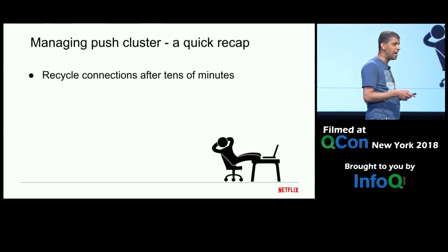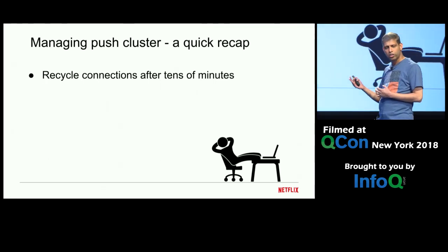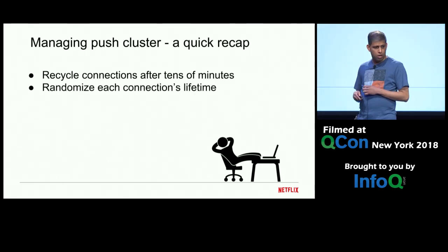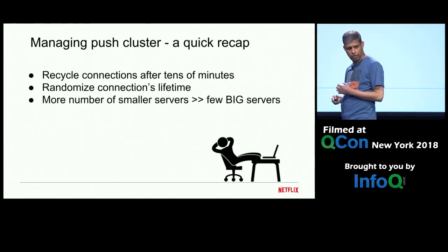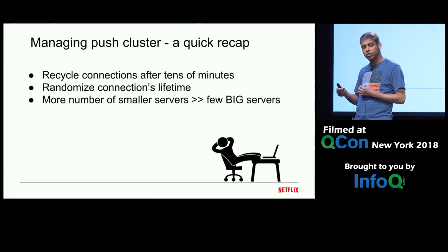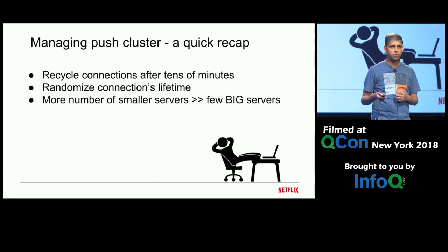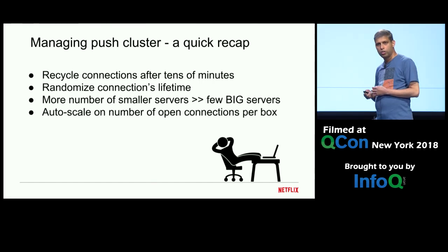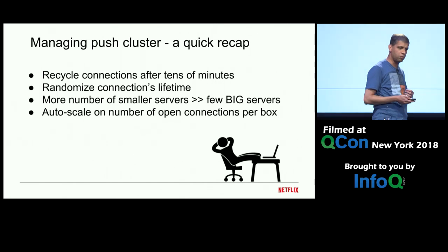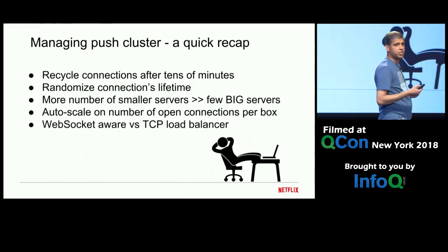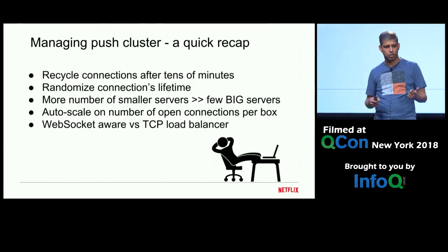Let's do a quick recap of how to effectively manage a push cluster in production. You want to recycle connections after tens of minutes, ideally between 25 to 30 minutes. You want to randomize each connection's lifetime to tame the thundering herd as time progresses. You should prefer more number of smaller servers over fewer but bigger expensive servers — that will withstand a thundering herd much better. You should auto-scale on number of open sockets rather than CPU or RPS. And finally, if you are going to put your push cluster behind a load balancer, either use a WebSocket-aware load balancer or run your load balancer in TCP mode.